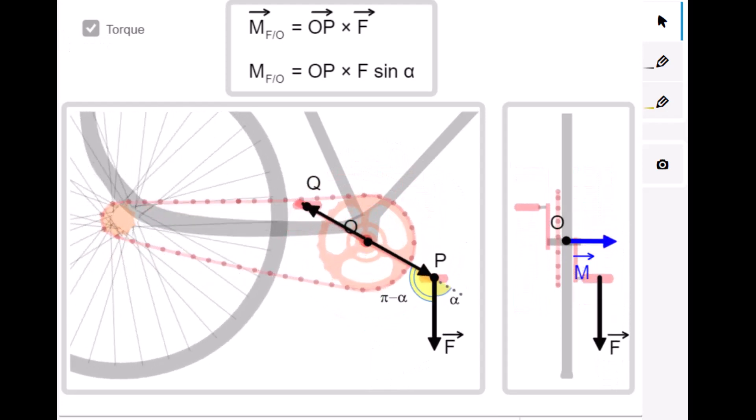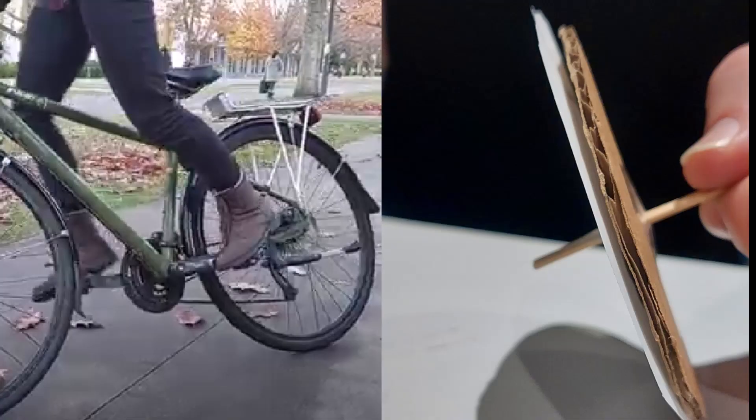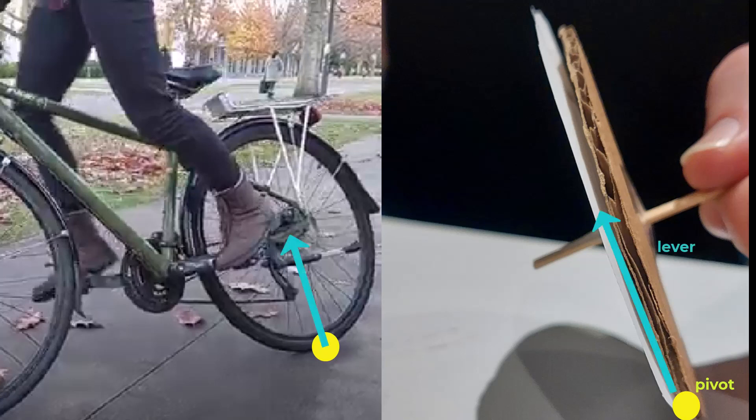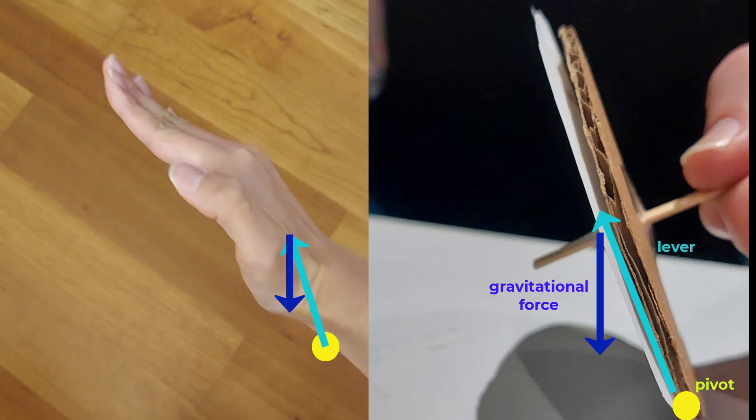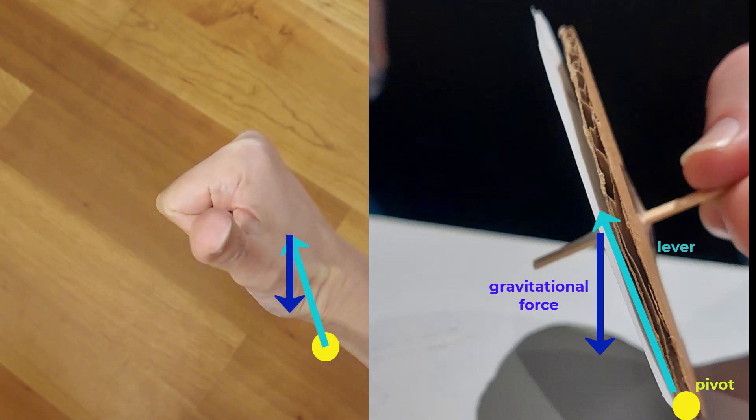When the bike tire is tilted a little, gravitational force can exert a torque on the tire. The pivot is at where the tire touches the ground, the lever arm is from the pivot to the center of mass of the tire, and the gravitational force points downward. The resultant torque is pointing out of the page.